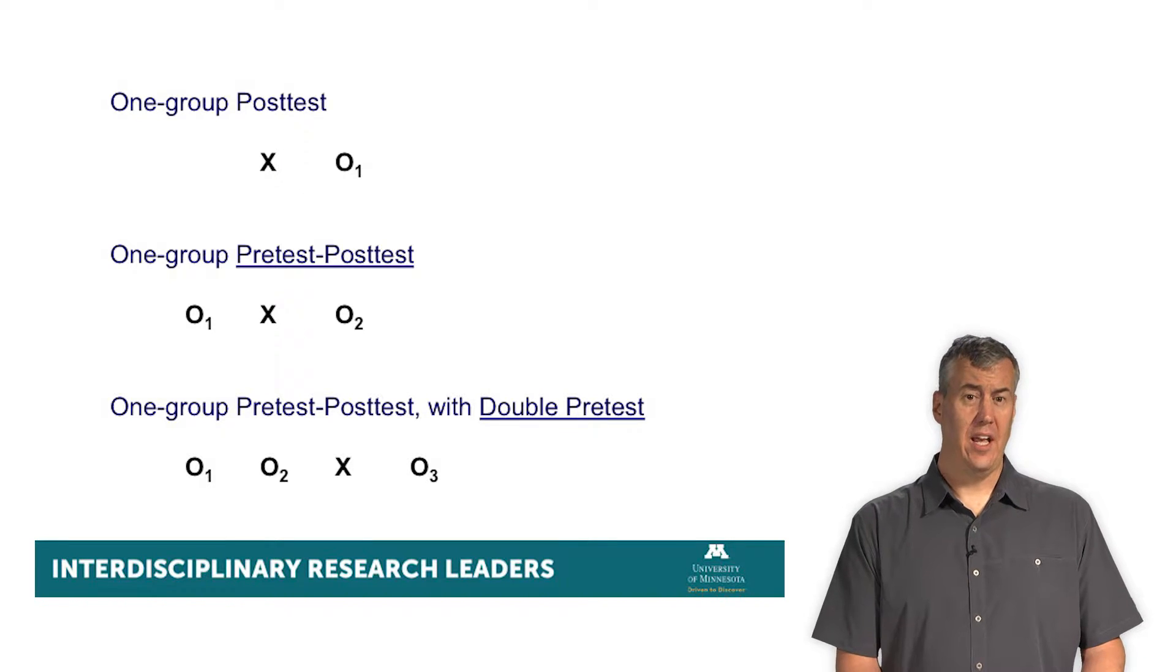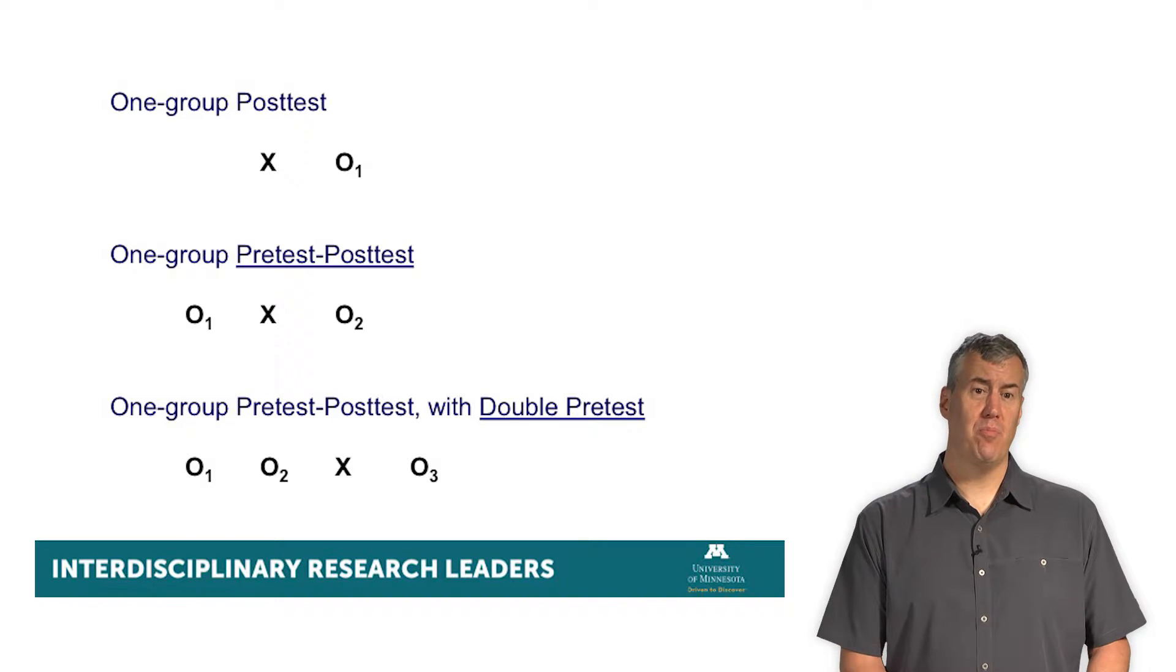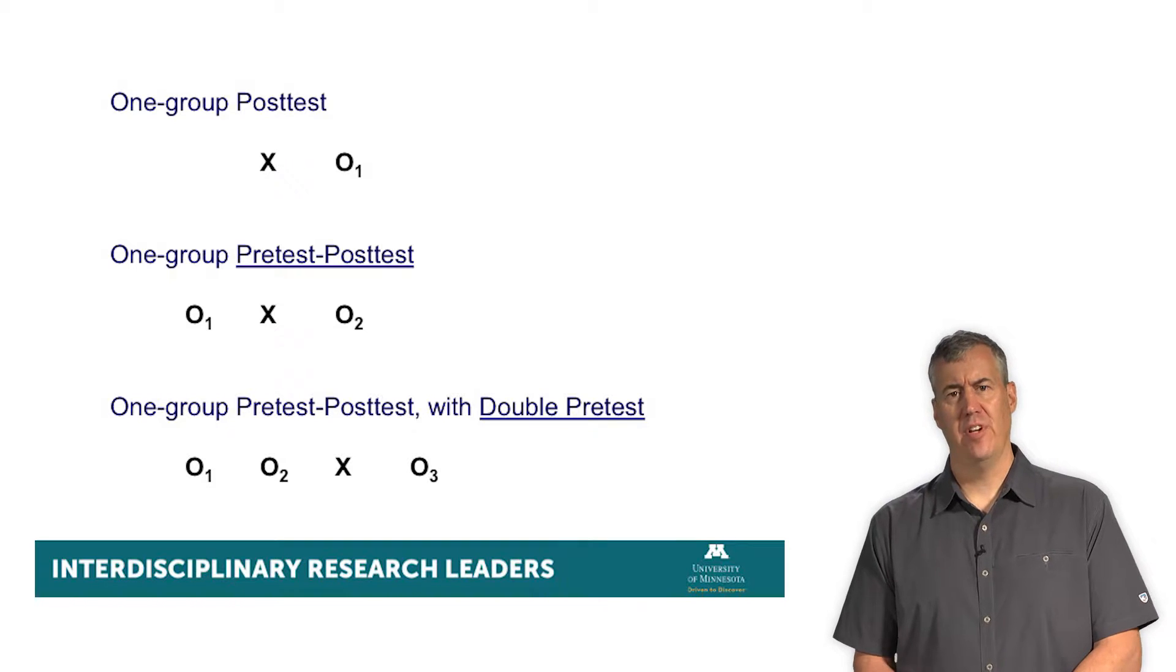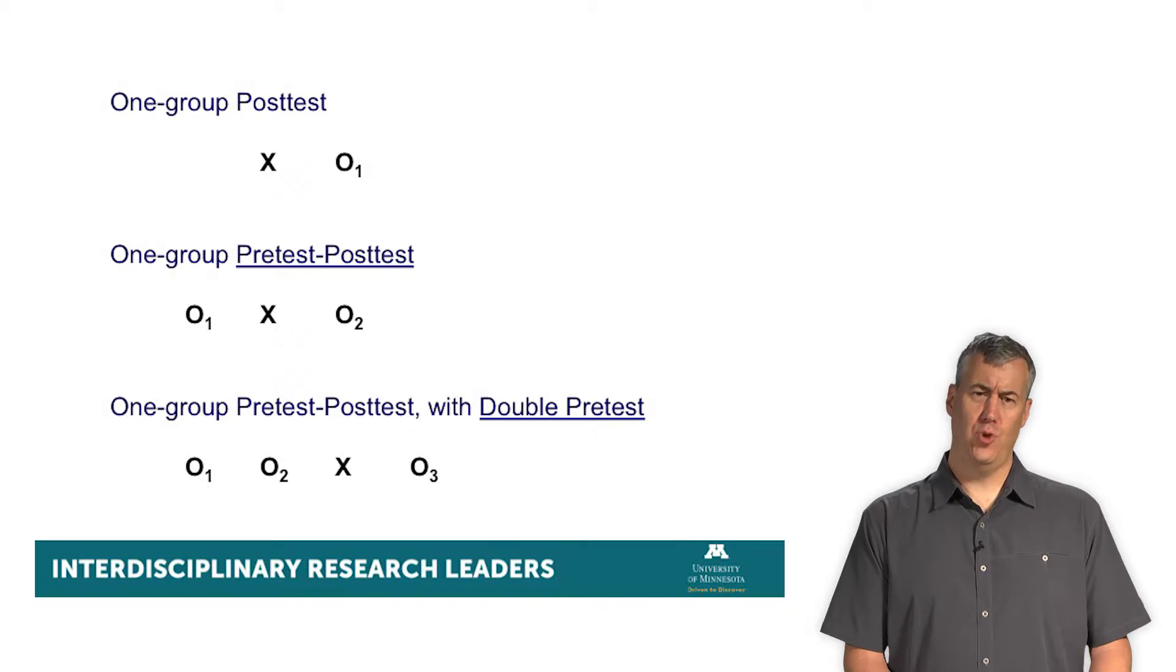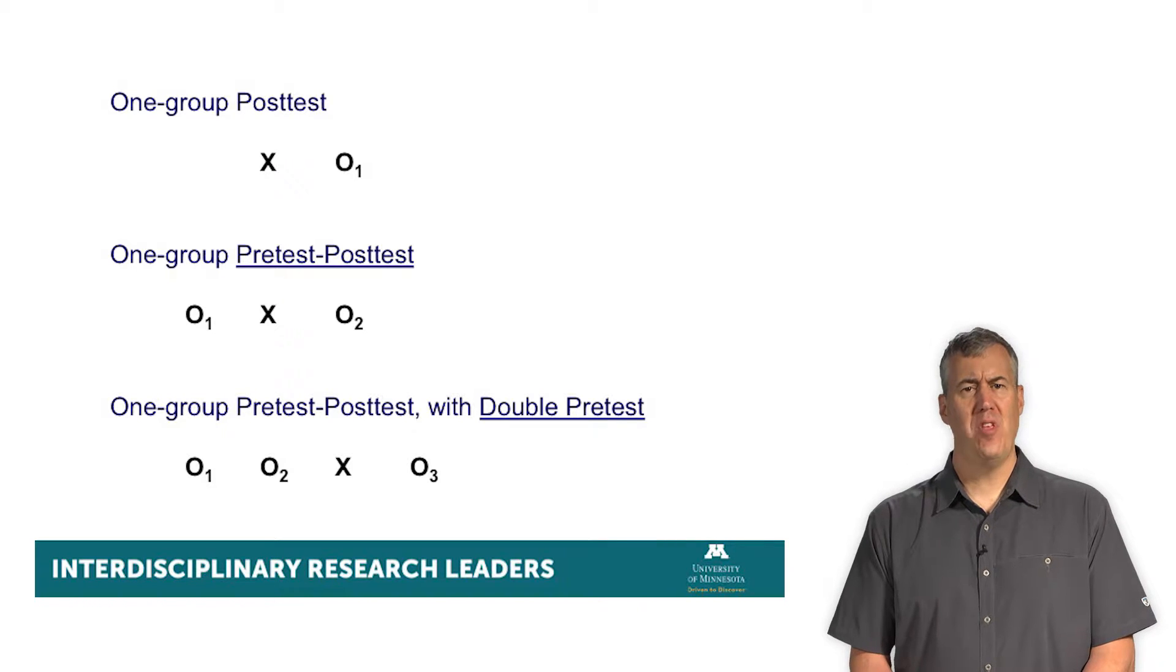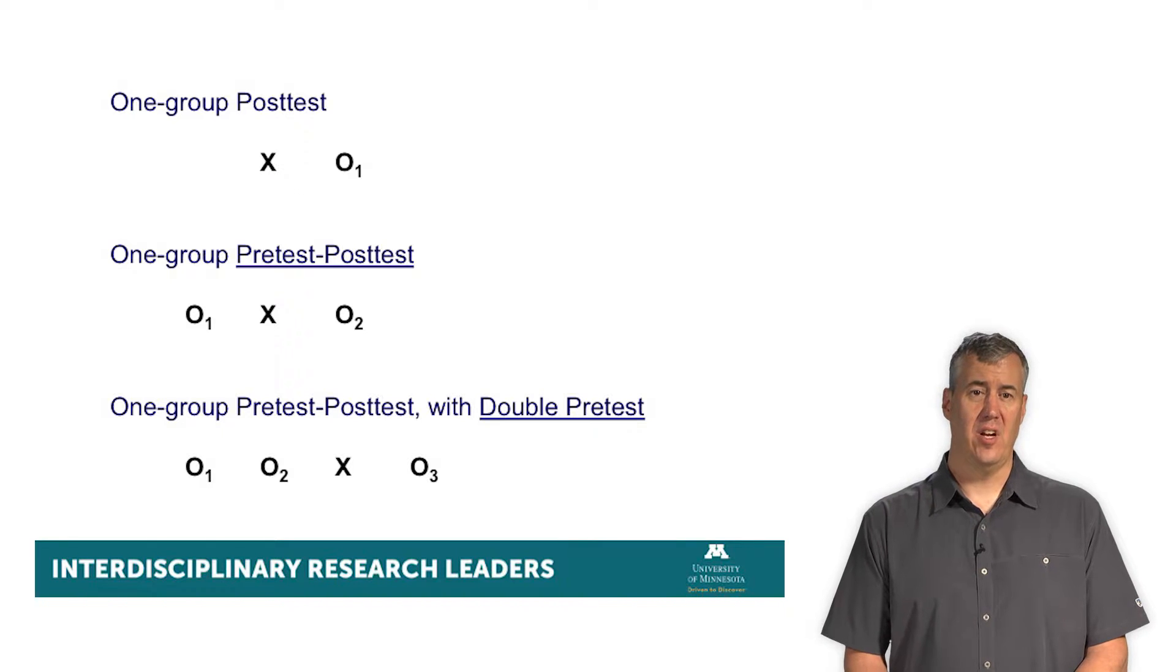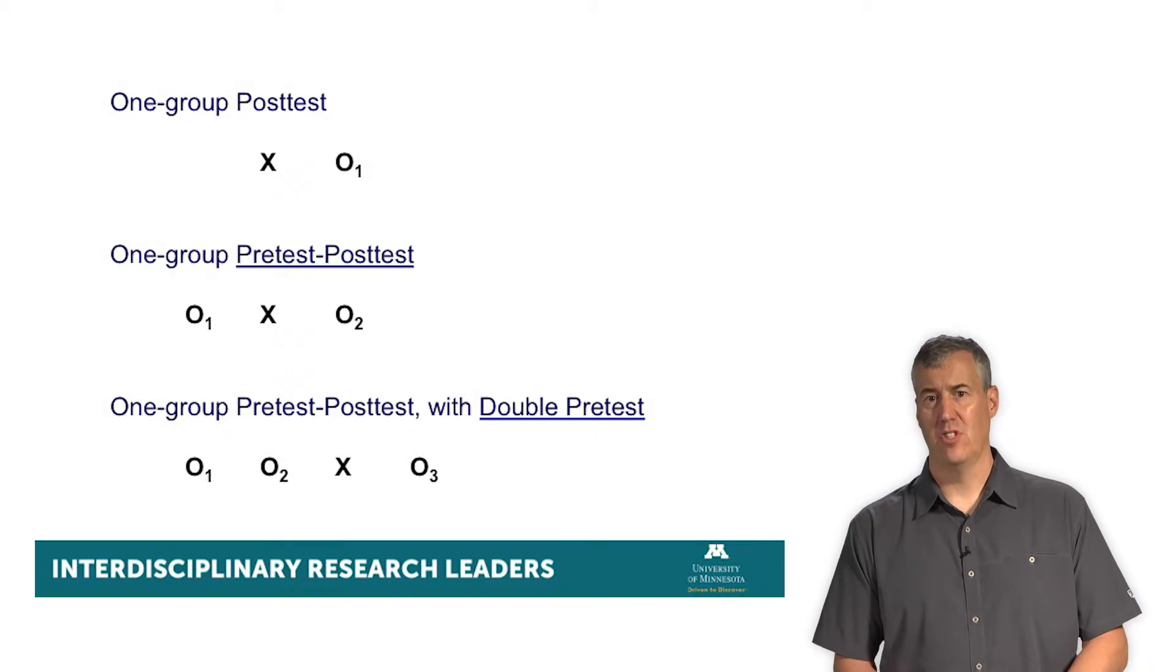We can also quite handily and often advantageously have more than one pre-test. In this very bottom part of the slide we see that there is an observation one and an observation two and then an intervention and then observation three. So here we have two pre-tests, an intervention and a post-test. This can give us some leverage to say, what was the naturally occurring trend before the intervention? And that might give us some better leverage to figure out what the actual effect of the intervention was on some health outcome.